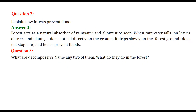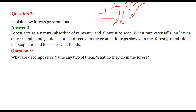Next question: explain how forests prevent floods. If this is a tree and this is soil, forests are natural absorbers of rainwater. When rain falls on a tree, it does not fall directly to the soil but instead drips slowly, increasing groundwater levels.